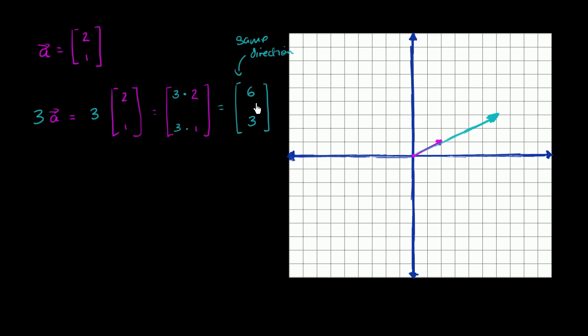But it did change its magnitude. Its magnitude is now 3 times longer, which makes sense, because we multiplied it by 3. One way to think about it is we scaled it up by 3. The scalar scaled up the vector. That might make sense, or it might give an intuition of where that word scalar came from. The scalar, when you multiply it, it scales up a vector. It increased its magnitude by 3 without changing its direction.